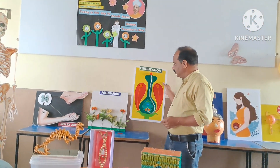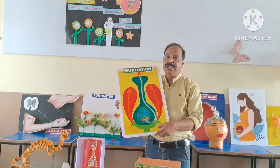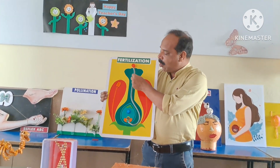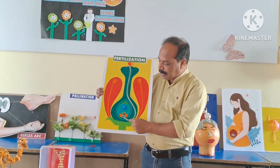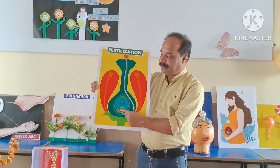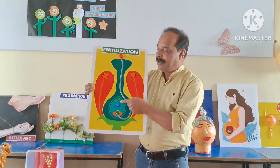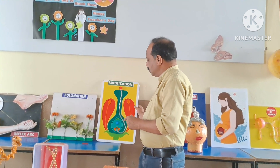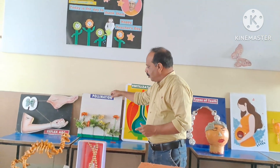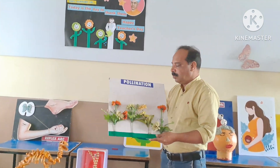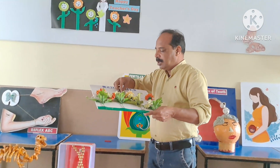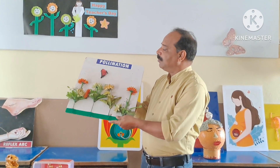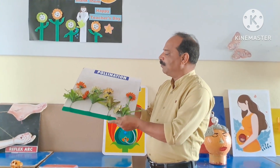Now how does fertilization occur in plants? When the pollen grains fall on the stigma, how do they migrate into the ovule? What is the first fertilization? What is the second fertilization? We can explain with the help of this model. Now this is about pollination — the types of pollination and how insects help with pollination. We can explain with the help of this model.